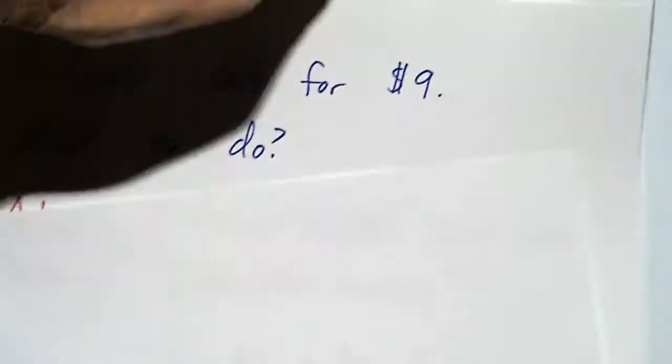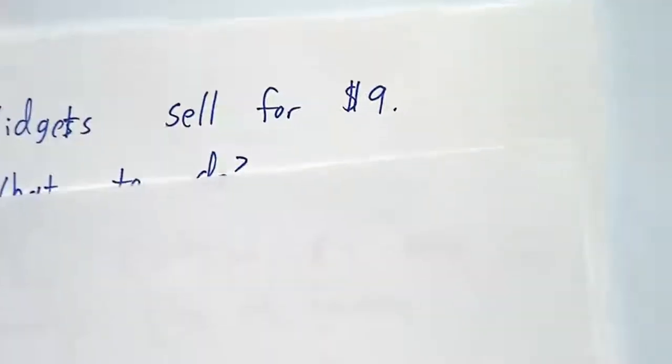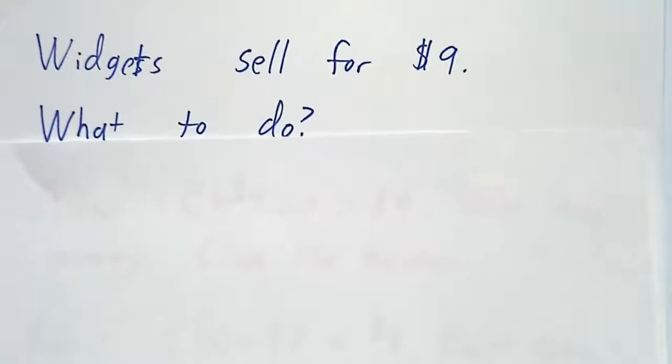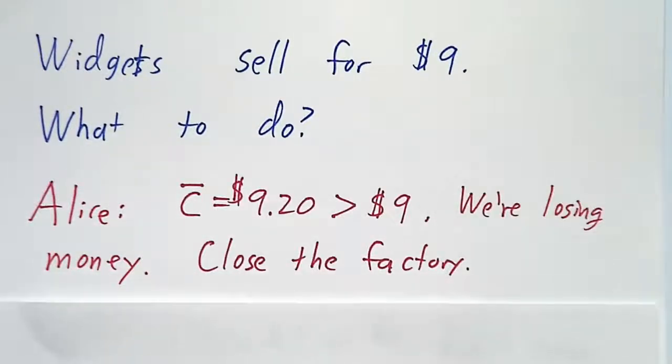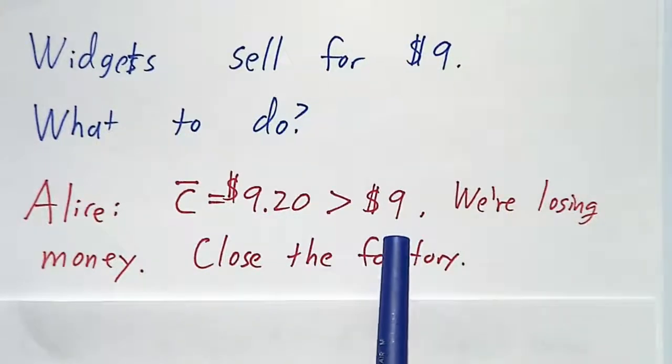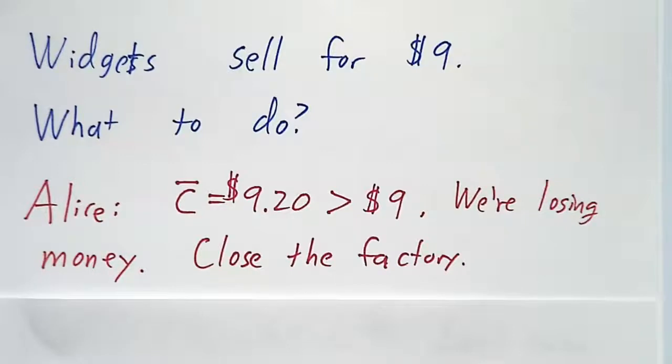So let's suppose that widgets sell for $9. If you were managing the factory, what would you do? Well, Alice says, you know what? Our average cost is more than $9. And we're only selling widgets for $9. We're losing money. We're losing $0.20 on every widget. We're better off just closing the factory.